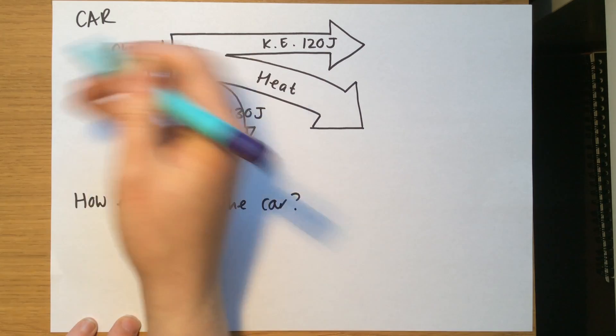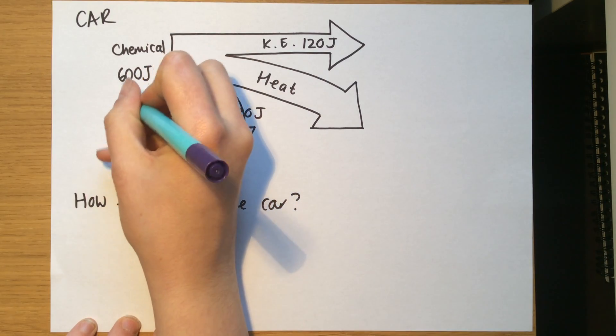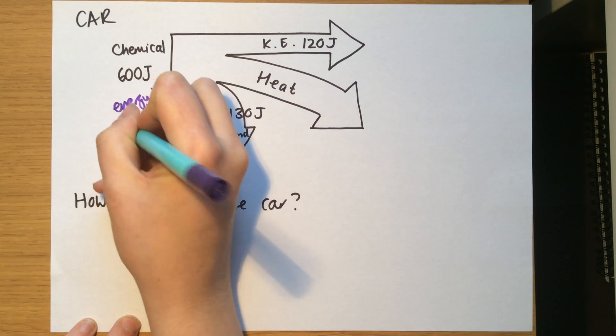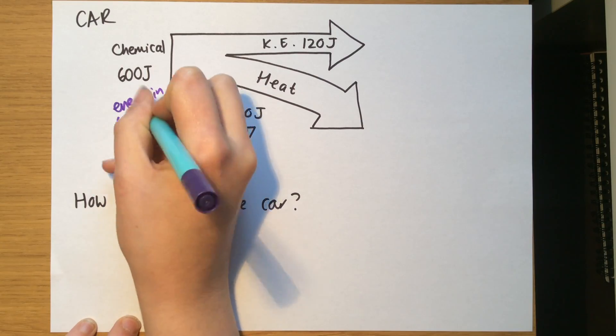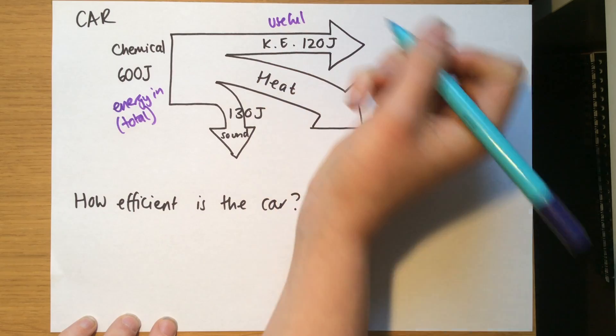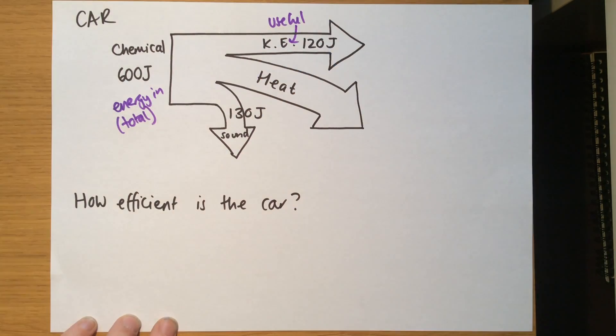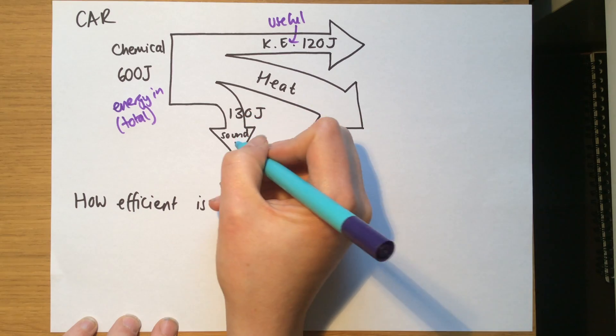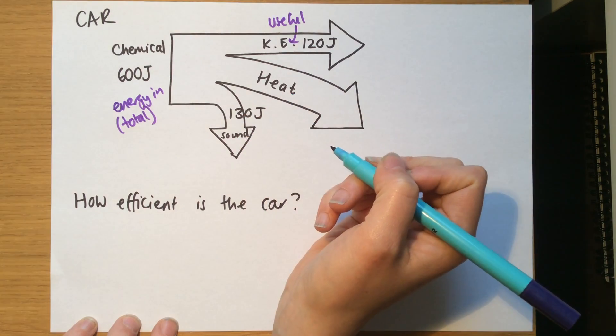600 joules is the energy in total. We know that KE is the useful energy because we want cars to move. This kinetic energy is movement energy, so this is the useful energy. We also know that sound and heat are both waste energy.